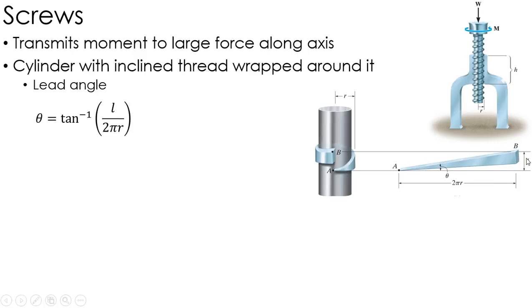It has a height of L, which we call our lead, and that's basically the distance between two threads on my screw. And then it's got a length or a width of the circumference, which is 2πr, because, again, that's one wrap around the screw.